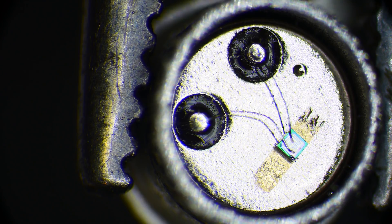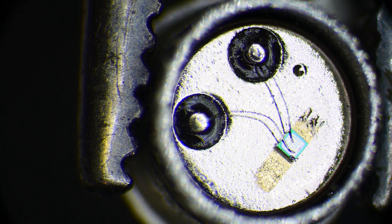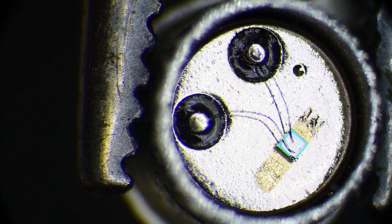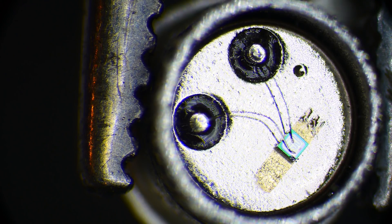So the transistor has emitter, base, collector. The collector is grounded, or not grounded, but connected to the case of the transistor. And then the emitter and base are wire bonded off. So let's see if we can even take a closer look than this.